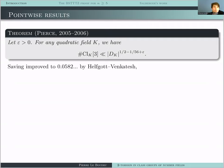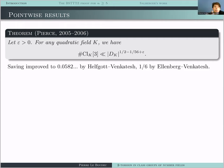This was improved first by Helfgott–Venkatesh by counting solutions of the same Thue–Mahler equation differently, using results from their paper about integral points on curves. Finally this was improved to one over six by Alpöge–Bhargava–Shnidman, not using GRH but using the strategy I told you about before — in this specific case one can prove that there are primes which do what they need, without assuming GRH.